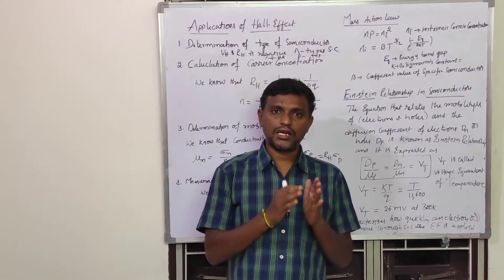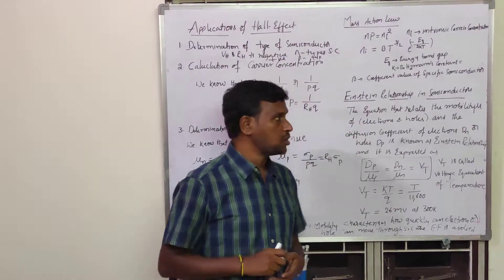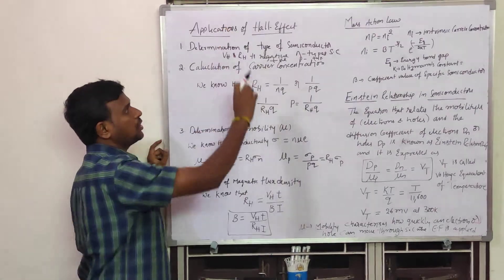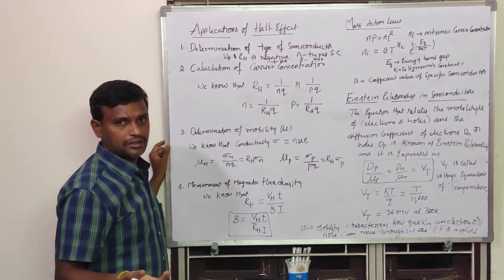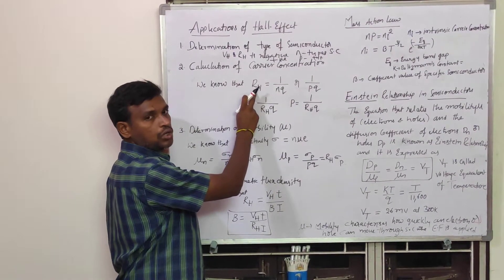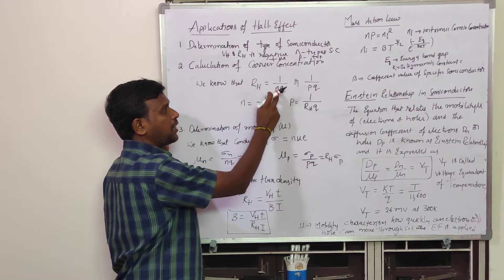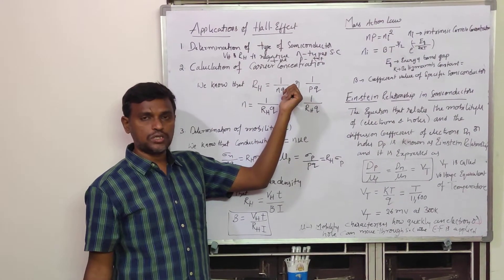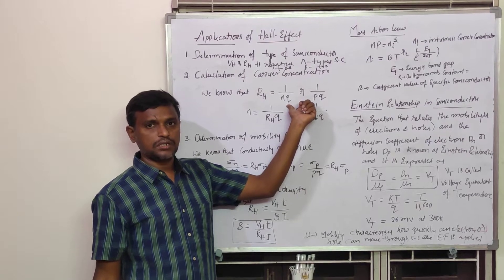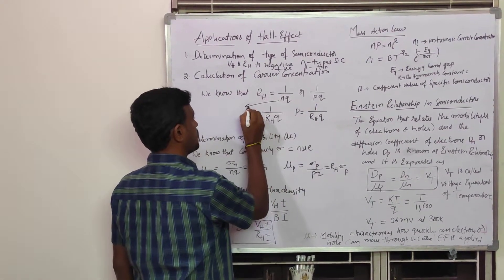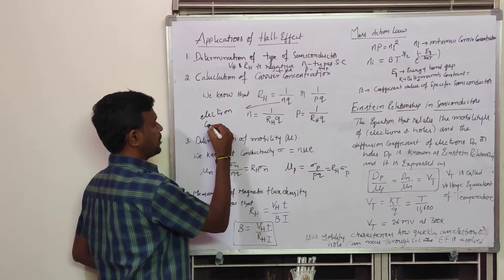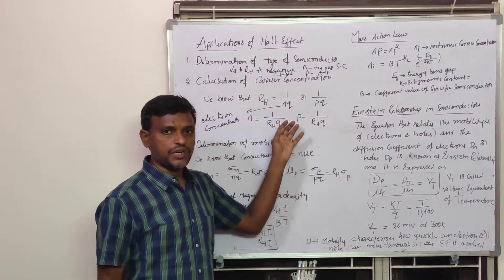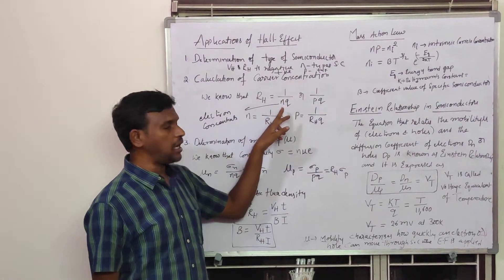In semiconductors, electrons and holes are the charge carriers. To find the concentration of electrons or holes, we use the Hall effect. We have already seen that the Hall coefficient RH equals 1/(NQ), where N is the electron concentration and Q is the charge.